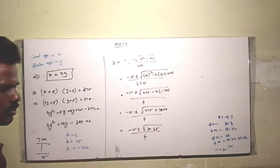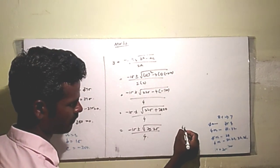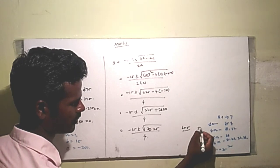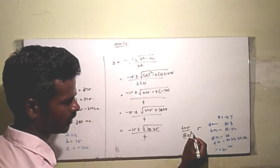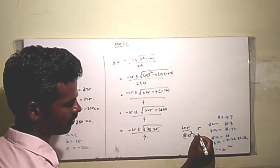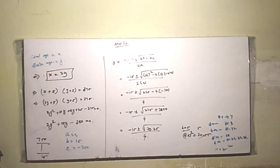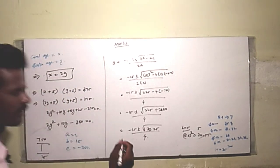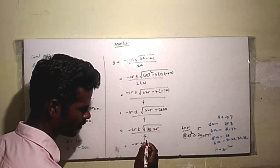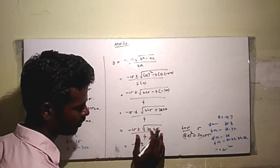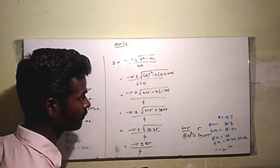So 225 plus 2800 is 3025 divided by 4. The square root of 3025 is 55. So we have minus 15 plus or minus 55 divided by 4.